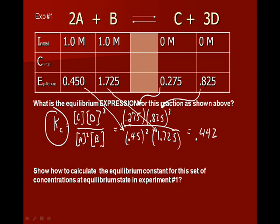And we do just the math, and we calculate this number called the equilibrium constant. And typically, no units here on the equilibrium constant. So, what did we get for the equilibrium constant in experiment one? 0.442. Well, let's look at experiment two.